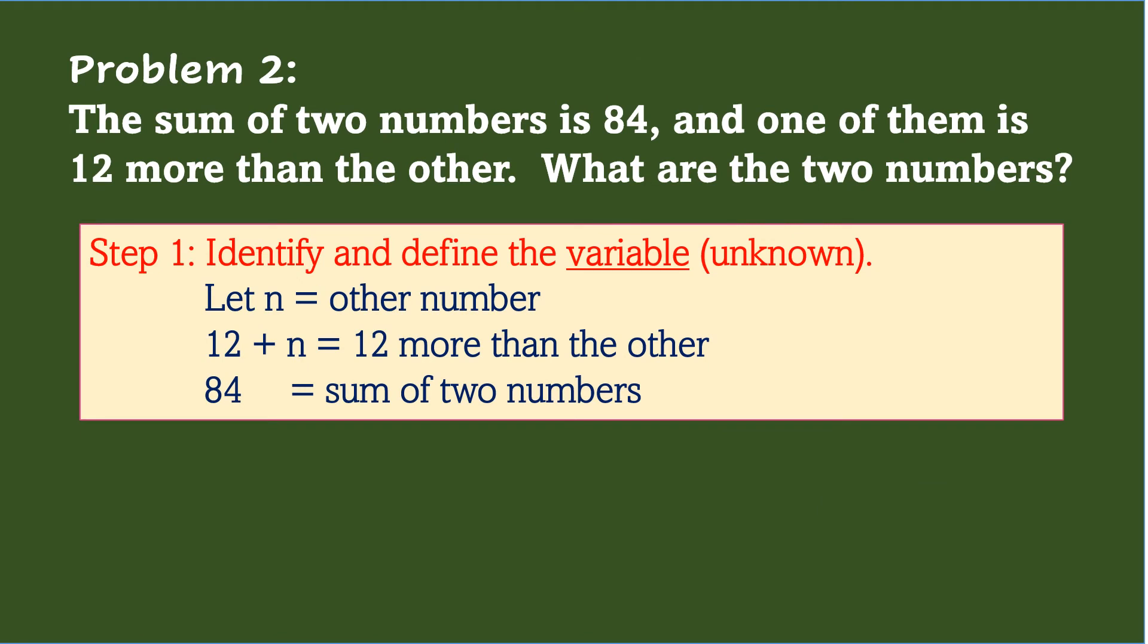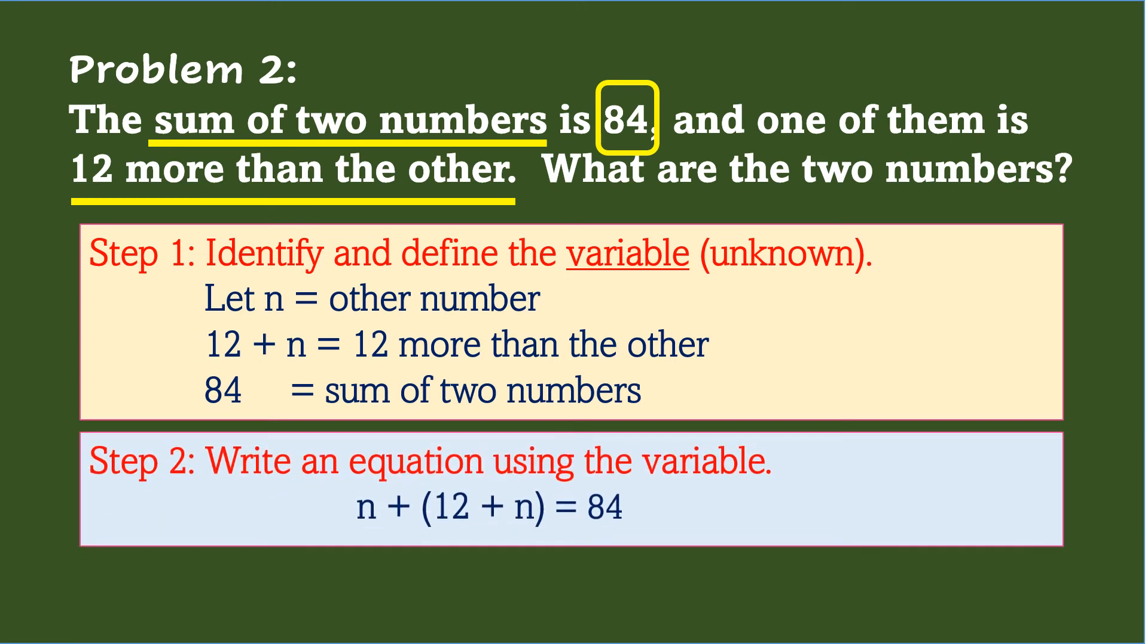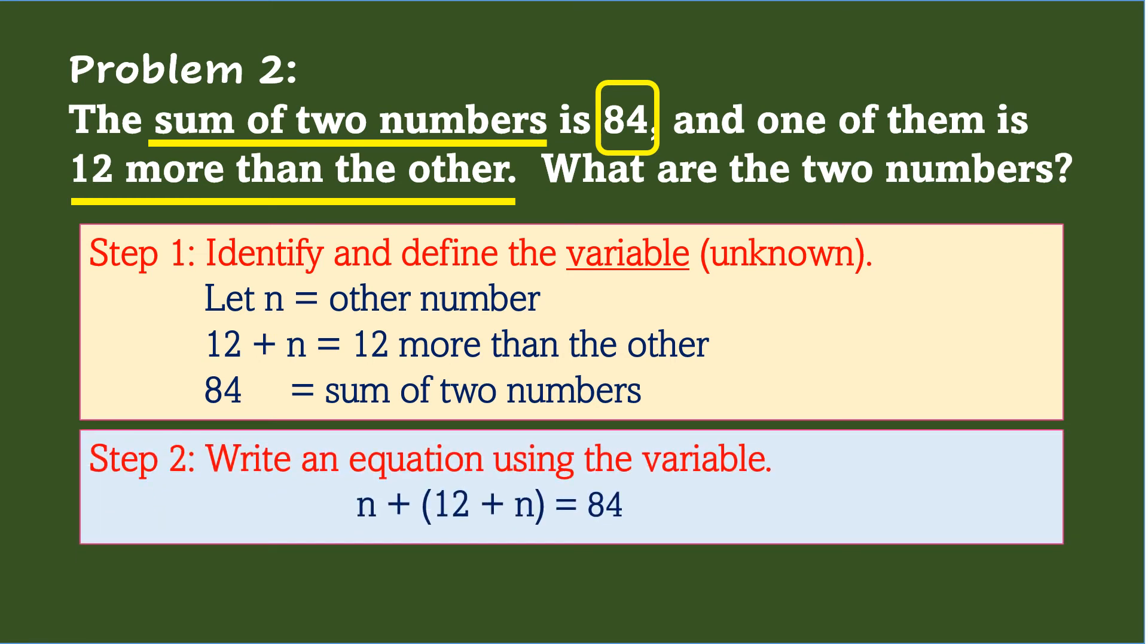After identifying and defining the variable, the second step is to write an equation using the variable. Since the sum of two numbers is being asked, wherein one of them is 12 more than the other, so that will be 12 plus n. The other one is unknown, so that's n. The total is 84. Therefore, the equation will be n plus 12 plus n equals 84.